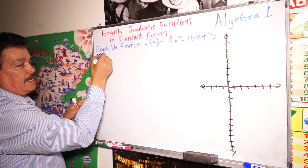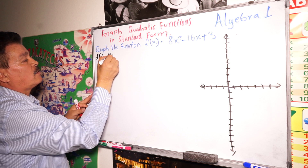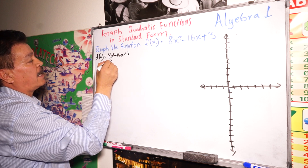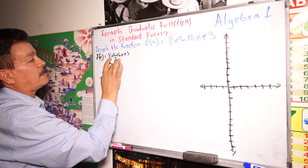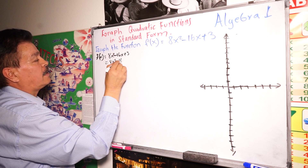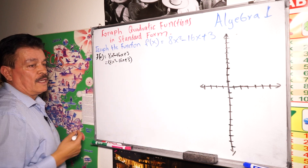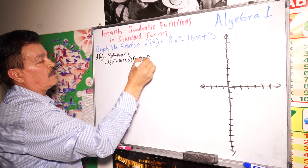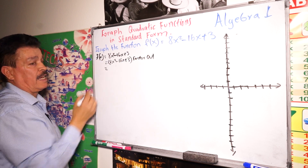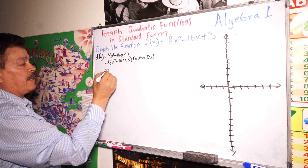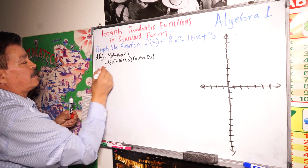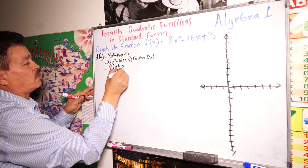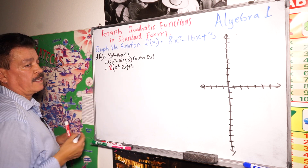So the first step: f(x) equals 8x squared minus 16x plus 3. We group this as 8x squared minus 16x, plus 3. Then we factor out — the factor here is 8 — giving us 8 times (x squared minus 2x) plus 3.